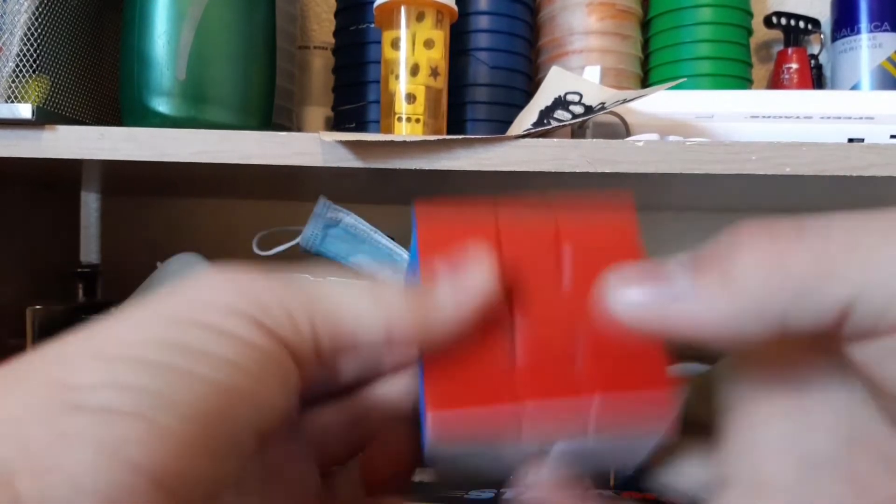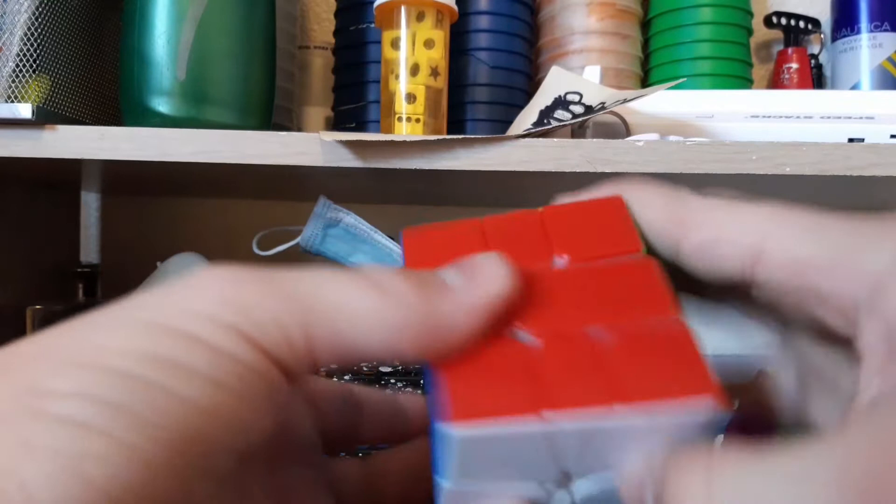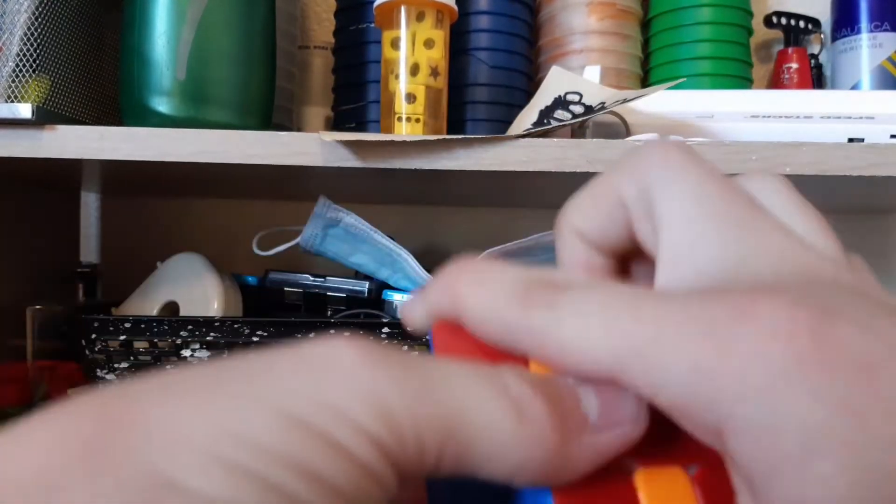And then lastly, we saved the best cube for last, Square-1. I use this Yuxin Little Magic M. Really nice cube for under 10 bucks and it's magnetic as well. This one's probably set up pretty nicely. Square-1 is my main event so I have been enjoying it lately.